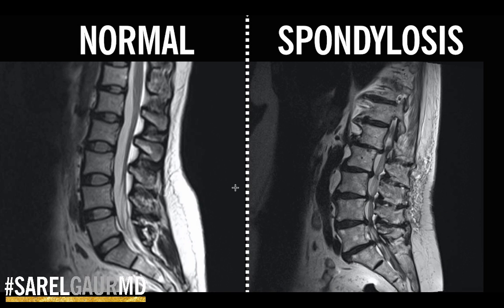Let's start with spondylosis. In some ways, spondylosis is probably the most difficult word to really understand. But the easiest way to understand spondylosis is to think of it as degenerative disease of the spine. Every joint in the body degenerates over time as we get older, and the spine is no different. Here I have a normal lumbar spine on the left, and on the right a lumbar spine with multilevel degenerative disc disease. This is what I would refer to as lumbar spondylosis.